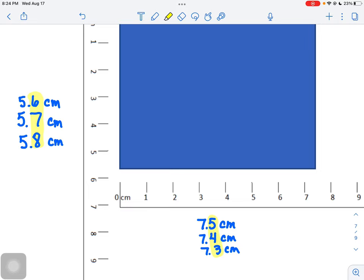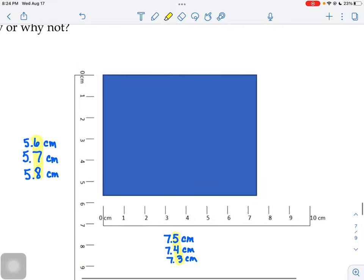So your rectangle, when you go to find the area, we would do length times width, right? So when we're doing those, when we're multiplying those things together, let's just say, let's go on the small side and then look at the large side possibilities.